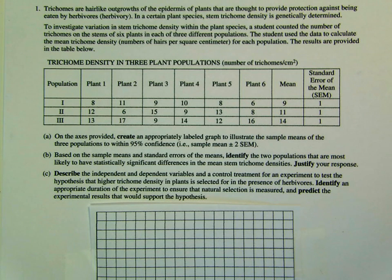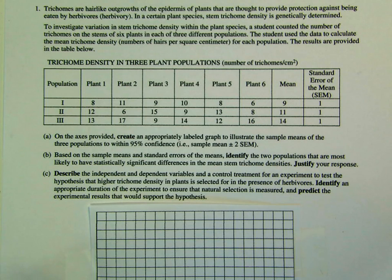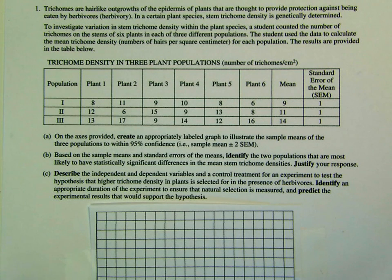The question we're going over today was question number one of the free response section in 2014. This was one of the long free response questions. About 20 to 25 minutes is a good amount of time to spend on it. I really like this question as an example because it incorporates analyzing a data table, making a graph, and designing an experiment — so it gets at a lot of different things.